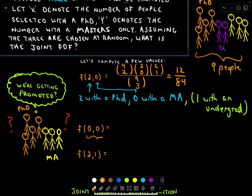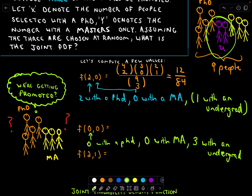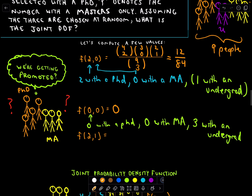Now let's compute f(0, 0): the probability of selecting zero with a PhD and zero with a master's degree. If that happens, we must be picking three people with only undergraduate degrees. But we only have two people with undergraduate degrees, so we can't promote three of them. The probability of this event is therefore 0.